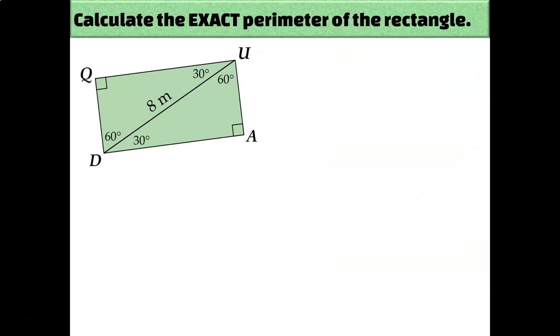For example, we could calculate the exact perimeter of this rectangle using the properties of 30-60-90 triangles. The perimeter of any figure is the distance around the shape, but I don't know any of the side lengths of this rectangle, I only know the length of its diagonal. But since the diagonal divided the rectangle into two 30-60-90 triangles, I can use the proportion of 1, square root of 3, and 2 to calculate the missing side lengths.